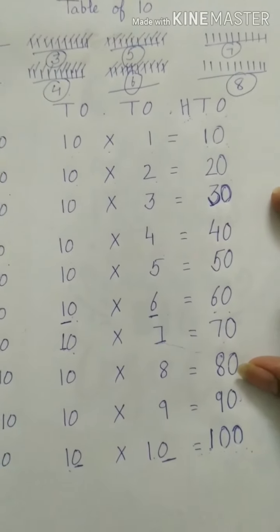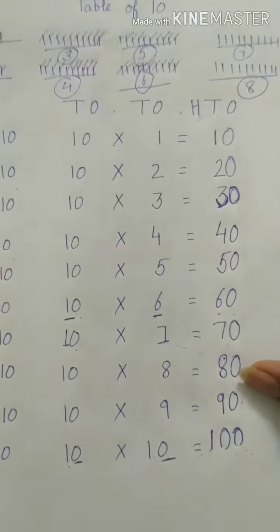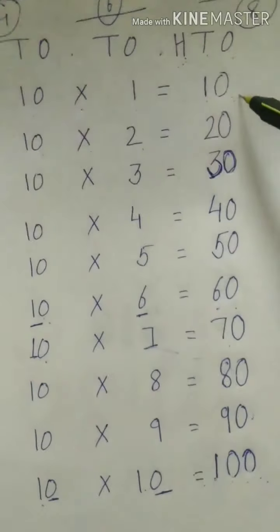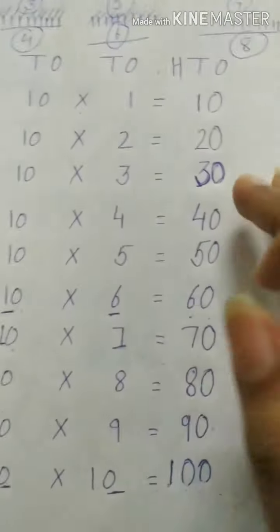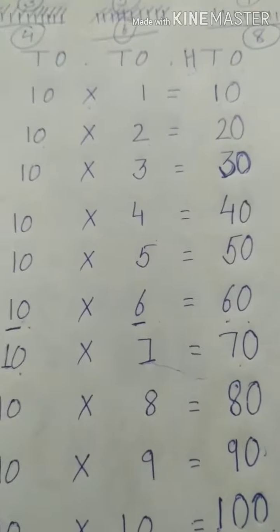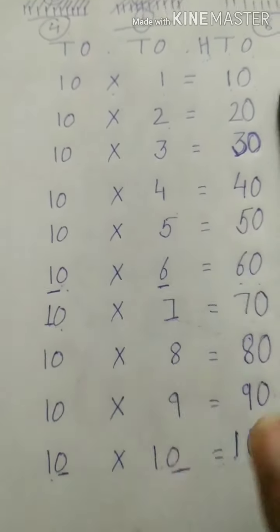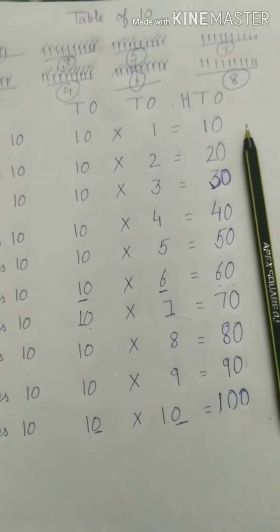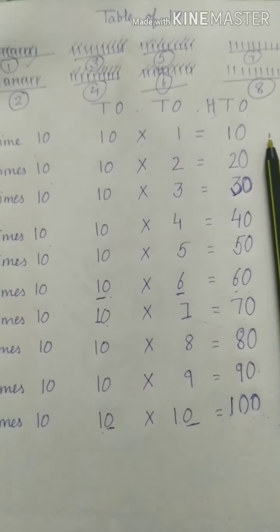So this is the table which is very easy. We are having zeros at ones place everywhere and the simple counting which we have written from 1 to 10. This is the answer of 10th table. I hope you find it quite easy. So I would request you to learn as well as write in your notebooks. Okay students have a good day. See you in the next video.